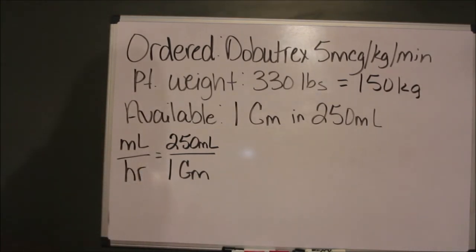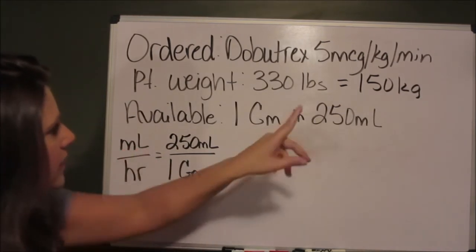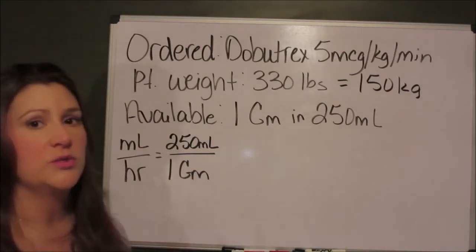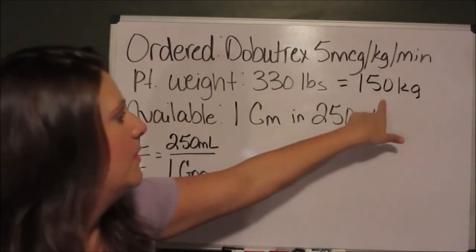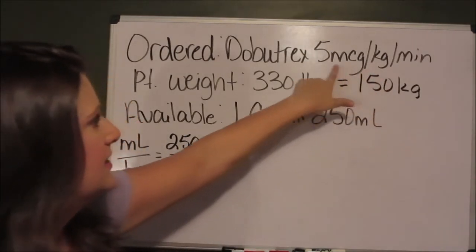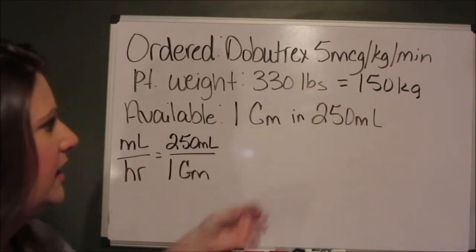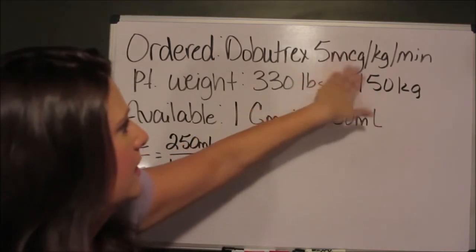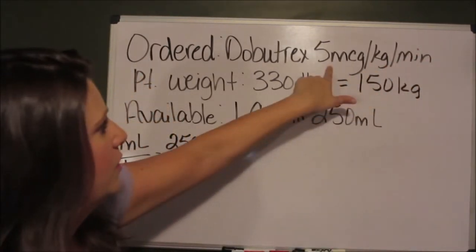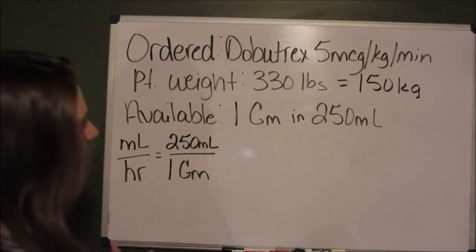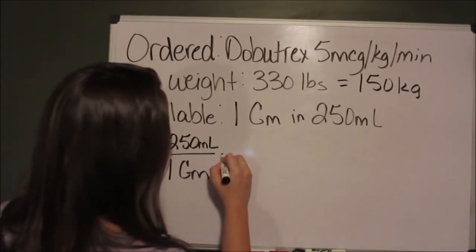Next, we have got to get rid of this gram. We have got to get rid of this gram and multiply 150 times my 5 micrograms. And that would give me how many micrograms per minute this patient will be receiving. So 150 times 5 is going to give us